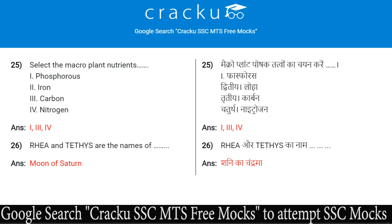What are the macro plant nutrients? The options are phosphorus, iron, carbon, and nitrogen. The answer is phosphorus, carbon, and nitrogen.